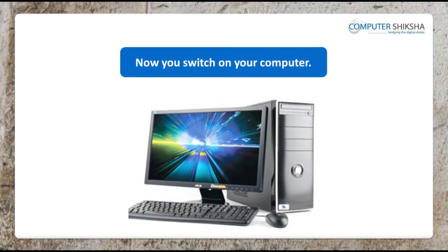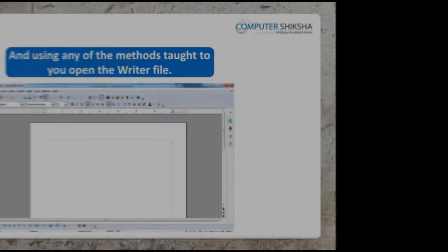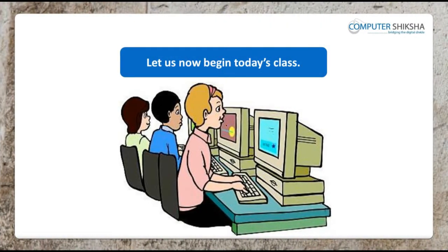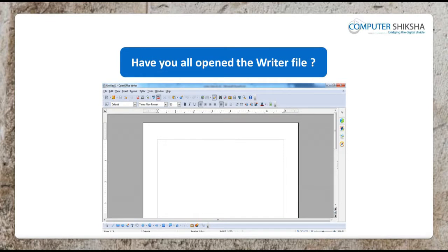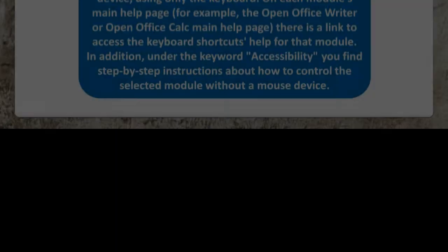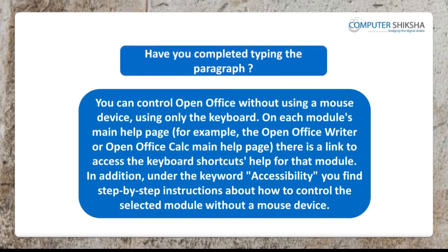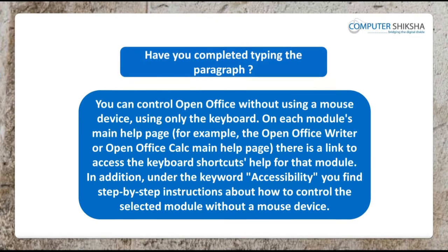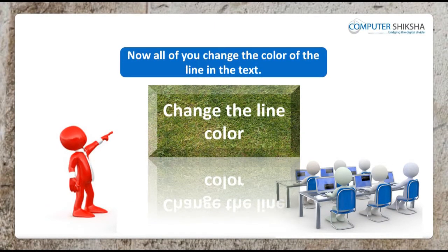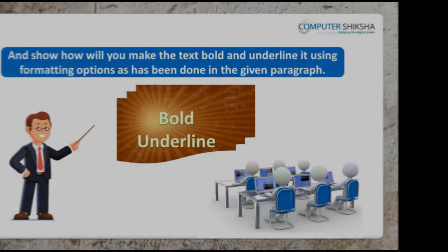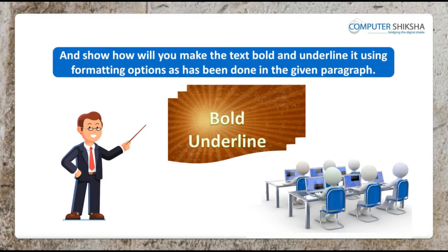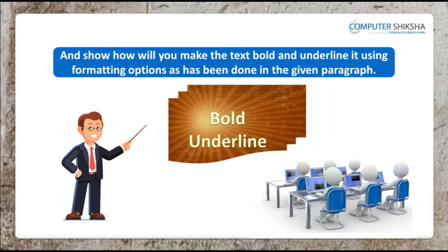Go ahead and switch on your computers and open the Writer file. Let us now begin today's class. Have you all opened the Writer file? Type out the paragraph given to you. Have you completed typing the paragraph? If not yet done, then hurry up and complete the typing. Now all of you change the colour of the line in the text and show how you will make the text bold and underline it using formatting options as has been done in the given paragraph.